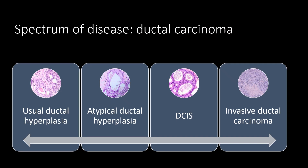Now that we understand normal breast histology, we can talk about the spectrum of disease. In terms of ductal carcinoma, there's a spectrum between usual ductal hyperplasia, atypical ductal hyperplasia, DCIS, and invasive ductal carcinoma.